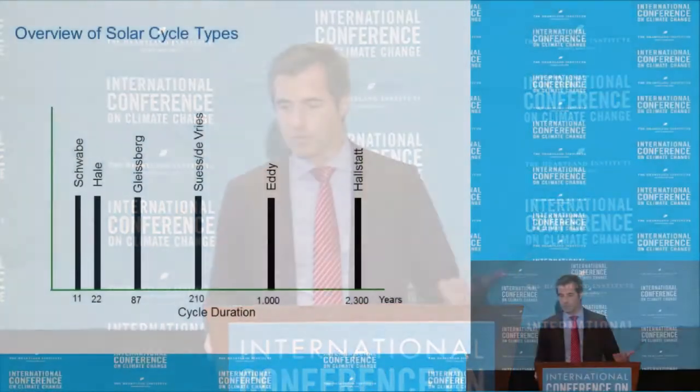This is without doubt — consensus, if there can be any consensus in science. Even the IPCC acknowledges it. There's also the Schwabe cycle and the Hale cycle at 22 years. These are all cycles that contribute to the variability of solar activity.